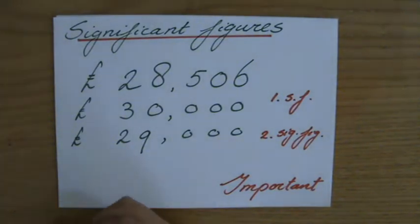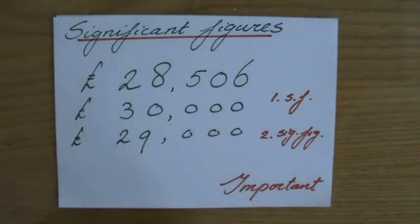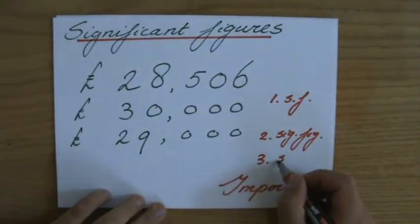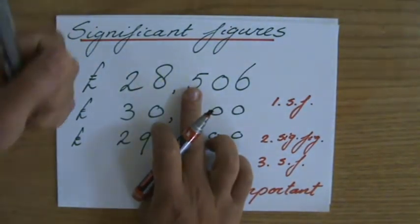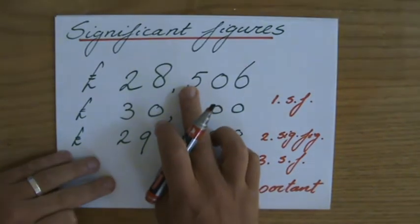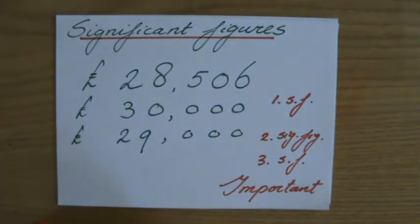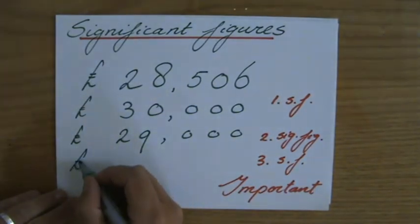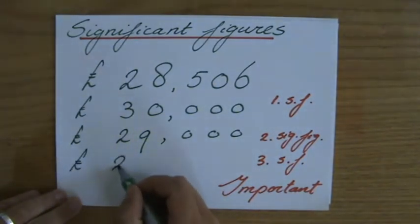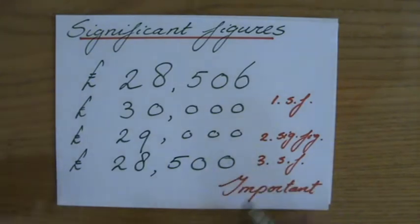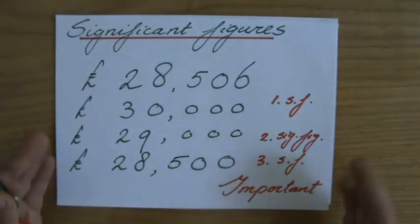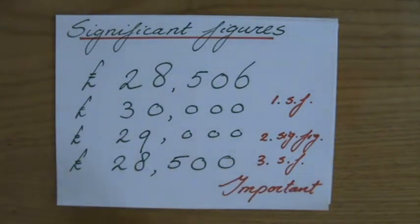Now let's round to three significant figures — 3SF. The five is the third significant figure. Does it stay a 5 or go up to a 6? The next digit is less than 5, so it stays a 5. Rounded to three significant figures, 28,506 becomes 28,500. The zeros are placeholders, and the number is getting more and more accurate with each additional significant figure.